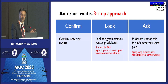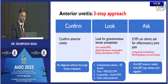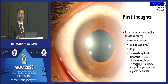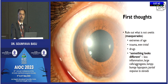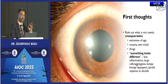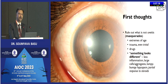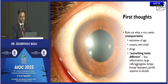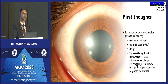What should be the first thought when you see a patient with possible anterior uveitis? The first thing is to rule out what is not uveitis. Very commonly missed in patients at extremes of age, a history of trivial trauma, history of drug ingestion, and always look for something that looks different. For example, if an eye has hardly any circumciliary congestion and what appears to be a hypopion has a lumpy bumpy appearance — no circumciliary congestion and a lumpy bumpy hypopion — you might be dealing with something else. This particular case turned out to be a patient with leukemia.